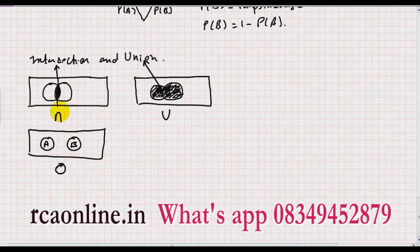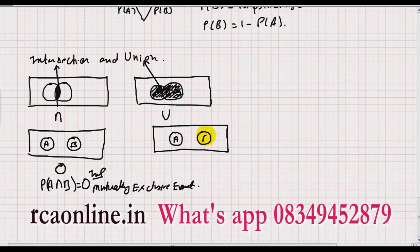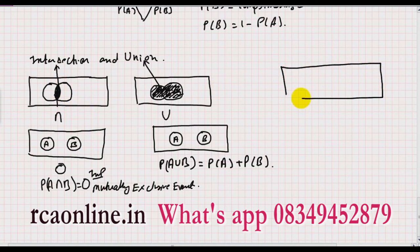For mutually exclusive events, since P(A ∩ B) = 0, the union is simply P(A ∪ B) = P(A) + P(B). Now take the case where the events are not mutually exclusive — there is a common overlapping area between A and B.